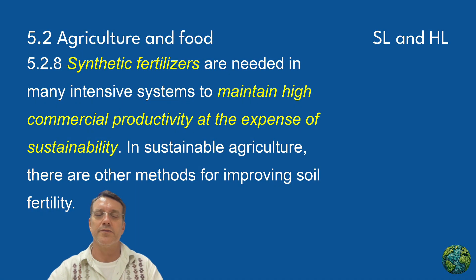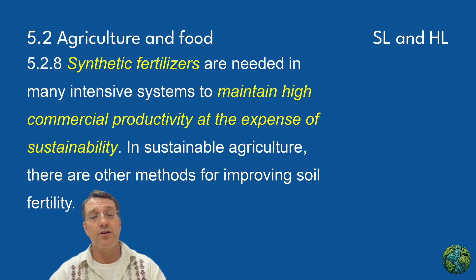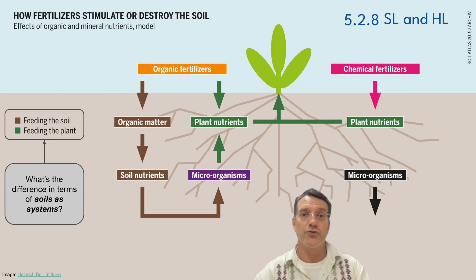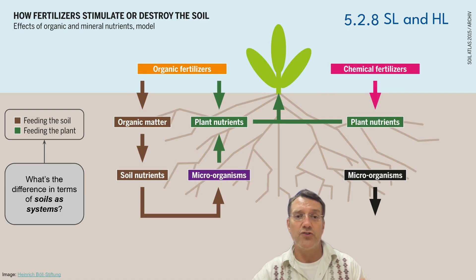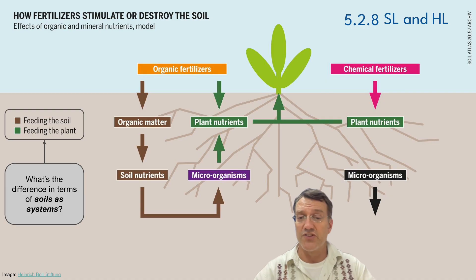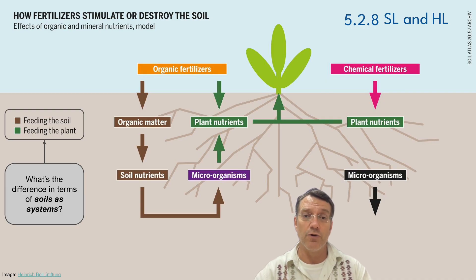This brings us to one of the key trade-offs in modern agriculture. Synthetic fertilizers are needed in many intensive systems to maintain high commercial productivity, but this comes at the expense of sustainability. In sustainable agriculture, there are alternative methods for improving soil fertility that work with natural systems rather than against them. Organic fertilizers feed the soil by adding organic matter, which supports soil microorganisms, which then provide nutrients to plants — creating a healthy soil ecosystem. Chemical fertilizers, on the other hand, bypass this system by feeding plants directly, and they can actually harm soil microorganisms and reduce long-term soil health. Organic approaches maintain soil as a living system, while synthetic approaches can degrade soil health over time.